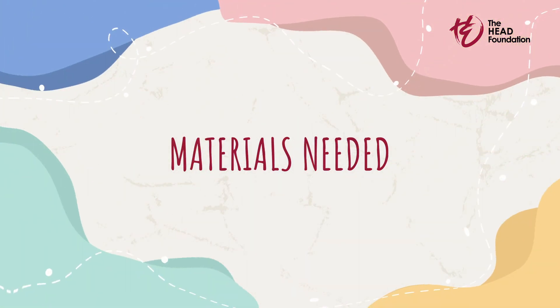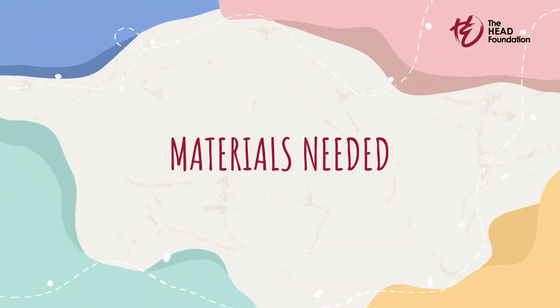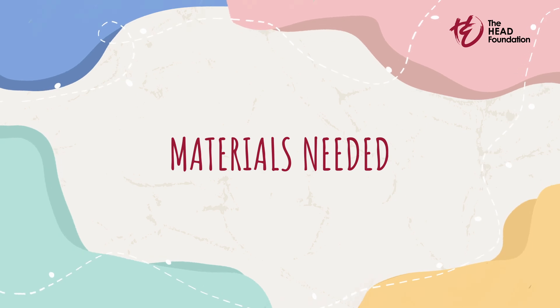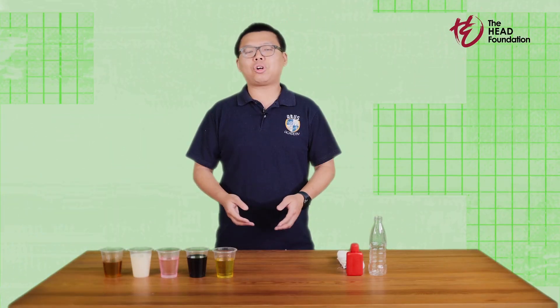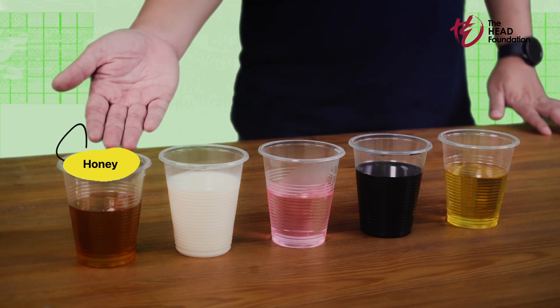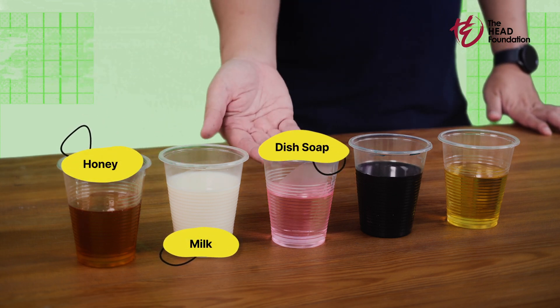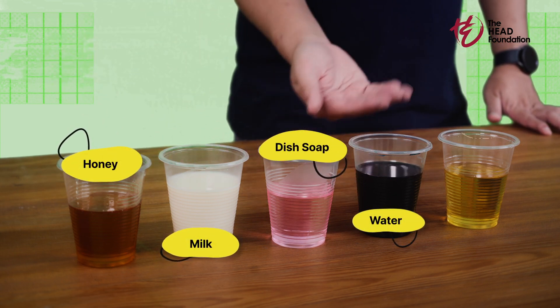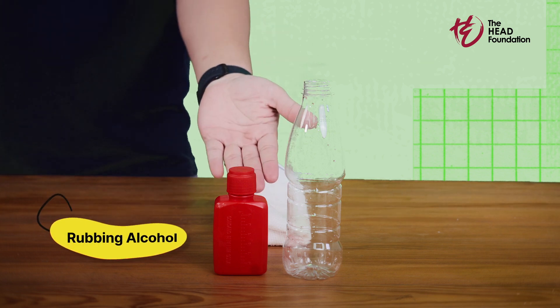Today, I will show you how to teach density to lower secondary school students in a way that sparks curiosity, and it works even in a low-resource setting. To conduct this experiment in your classroom, you will need liquids of different densities. Today I'm using honey, milk, dish soap, water, oil, and rubbing alcohol.